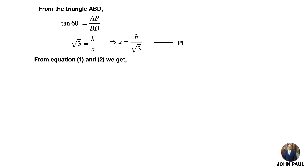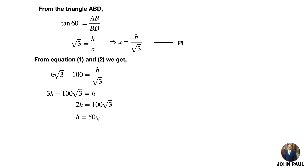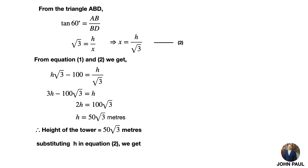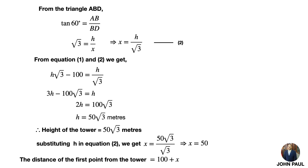Comparing equation 1 and equation 2: H root 3 minus 100 equals H by root 3. Cross multiplying by root 3: 3H minus 100 root 3 equals H. Grouping H on one side: 3H minus H equals 2H equals 100 root 3, so H equals 50 root 3 meters. Substituting H into equation 2: X equals 50 root 3 by root 3, cancelling root 3 gives X equals 50 meters. The distance of the first point from the tower is 100 plus 50 equals 150 meters.